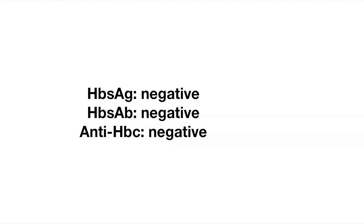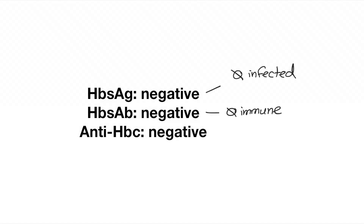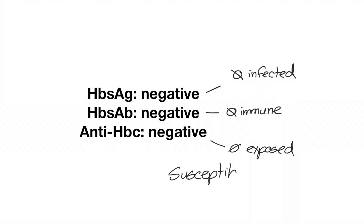Let's work through some examples. In this first set of labs, the person is negative for surface antigen, meaning they are not infected. Surface antibody is also negative, meaning they are not immune. Core antibody is also negative, meaning they have never been exposed. Putting all three together, this person is susceptible to hepatitis B, as they have not been exposed to the virus nor vaccinated against it.